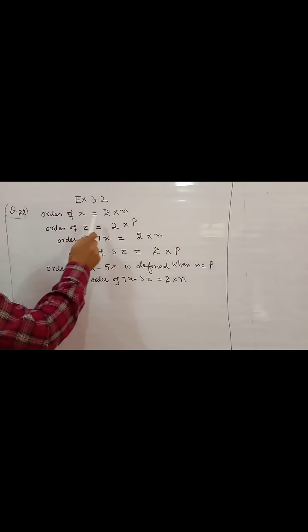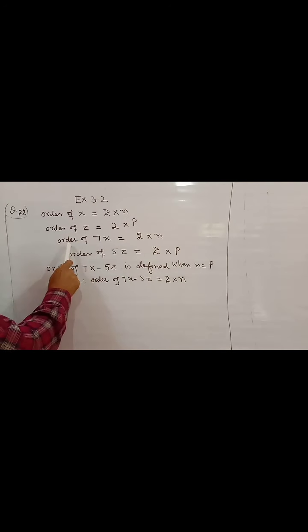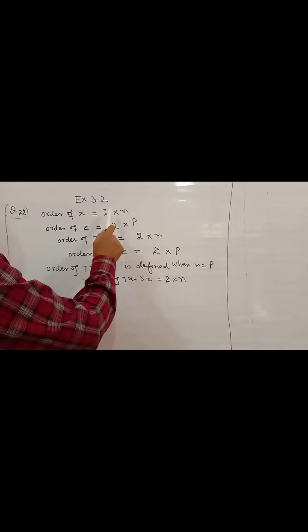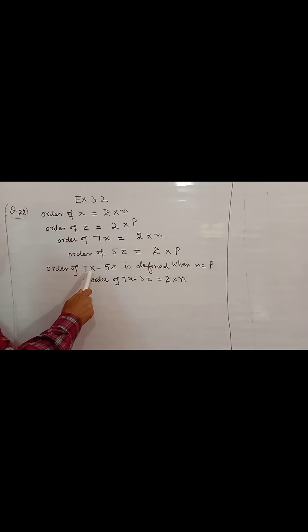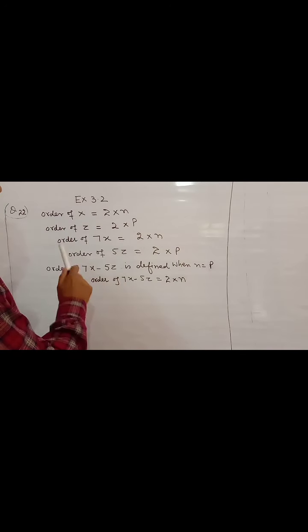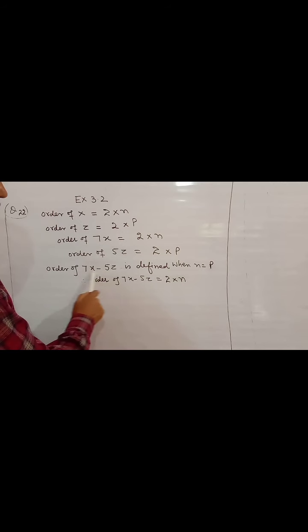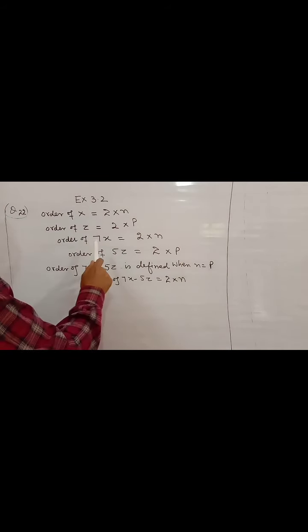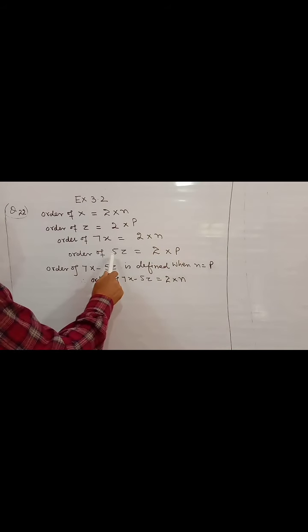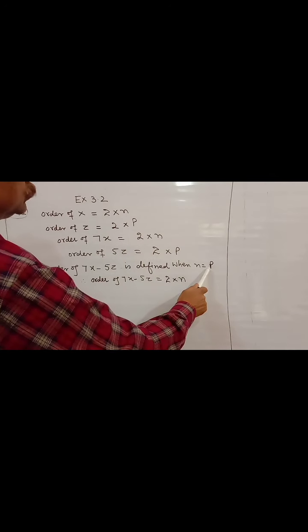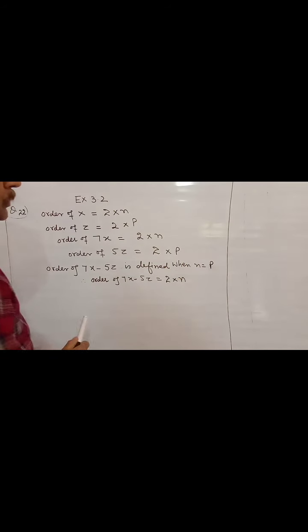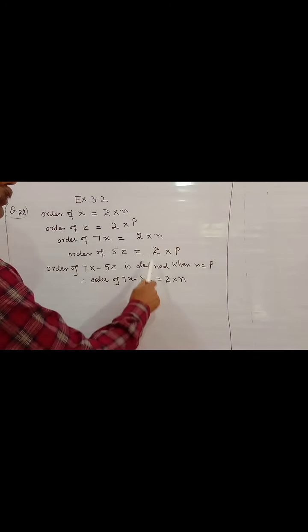Question number 22. Order of X equals 2 cross n, order of Z equals 2 cross p. Order of 7X equals 2 cross n, order of 5Z equals 2 cross p. For 7X minus 5Z, subtraction of matrices is possible only when the two matrices are of the same order. So order of 7X is 2 cross n and order of 5Z is 2 cross p. Therefore n must equal p, and the order of 7X minus 5Z is 2 cross n.